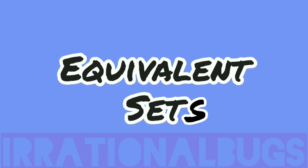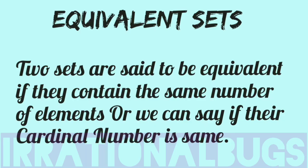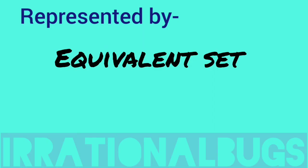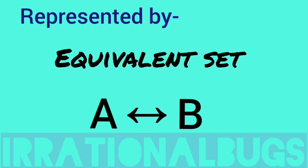Now, we have equivalent set. Two sets are said to be equivalent if they contain same number of elements, or we can say if their cardinal number is same. The elements inside, if we count them, they should be same in both. Equivalent set is represented with double sided arrow. If A and B are equivalent, we use this mark.